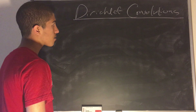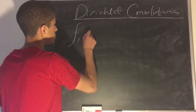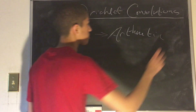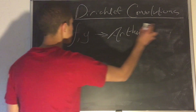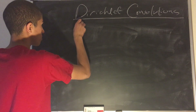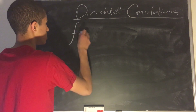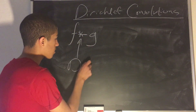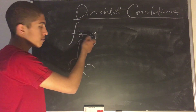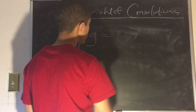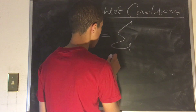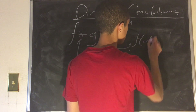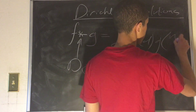So let's see how this works. Let's say that f and g are both arithmetic functions. Then we have f convoluted with g, or f star g — this is the Dirichlet convolution. So f convoluted with g is defined to be the sum over d divides n of f of d times g of n over d.